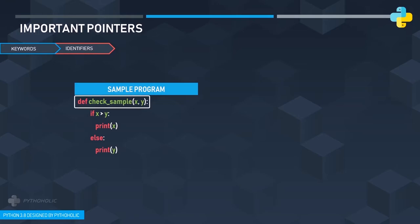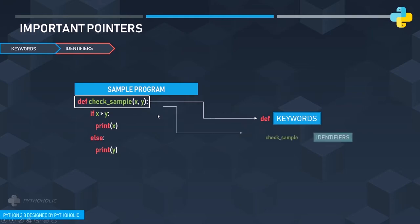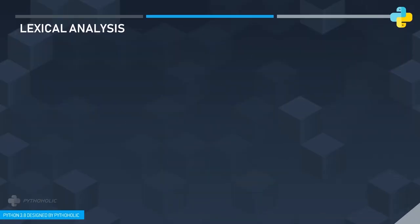Looking at the visualized code, all the highlighted matching-colored patterns — 'def', 'if', 'print', 'else' — are keywords. The name 'check_sample' is the identifier, which identifies the name of the function. This illustrates clearly how keywords and identifiers differ from one another.